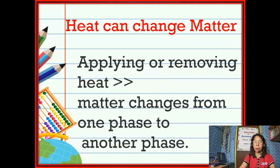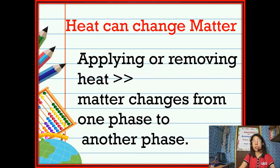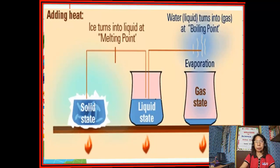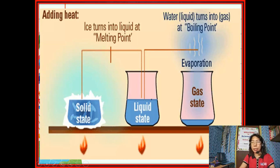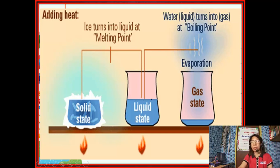Heat can change matter. By applying or removing heat, matter can change from one phase to another. Take a look at the picture. In the solid state, once we add heat to solid ice, it turns into liquid — this is what we call the melting point. In the liquid state, if we apply heat and the liquid reaches the boiling point of 100 degrees Celsius, the water or liquid turns into gas. This is what we call evaporation — liquid state to gas state.